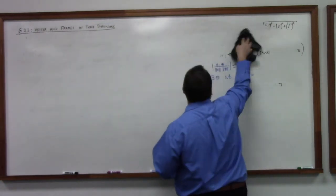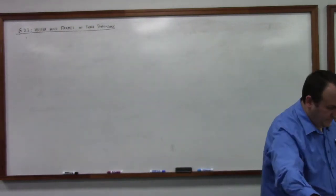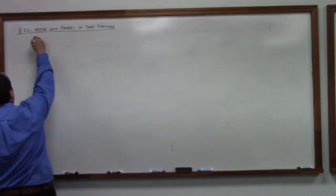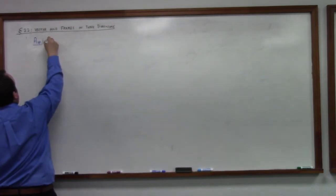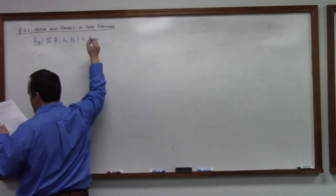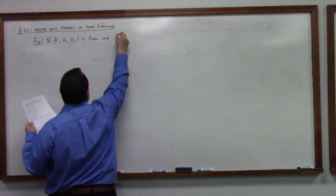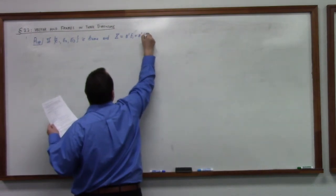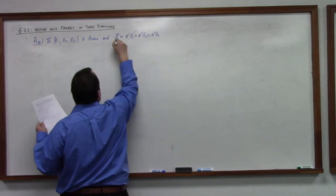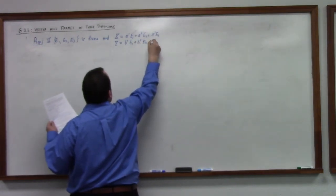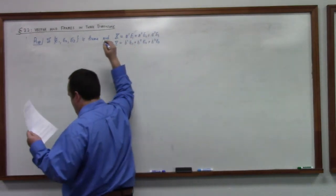Good news. With respect to an orthonormal frame, dot products and cross products work like we've already talked. So proposition here. If E1, E2, E3 is frame, and X is equal to, say, A1 E lower one plus A2 E lower two plus A3 E lower three. And Y is equal to, say, B1 E1 plus B2 E lower two plus B3 E lower three. Then guess what. X dot Y is nothing more than A1 B1 plus A2 B2 plus A3 B3.